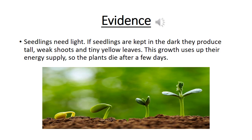What happens when plants cannot make their own food without light? Seedlings need light. If seedlings are kept in the dark, they produce tall weak shoots and tiny yellow leaves. This growth uses up their energy supply, so the plants die after a few days. Seedlings use their first leaf to photosynthesize and produce the glucose they need to keep growing.